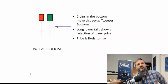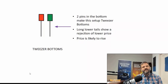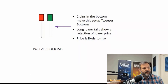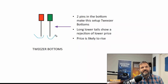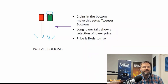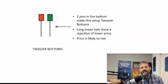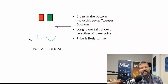The other one is a tweezer bottom, and again this is a similar concept. It didn't engulf, but it tested the level. If it had gone down a little lower and closed just a bit higher, it would have been considered an engulfing. So this is very close to an engulfing — the exact same level. You can also call this a double bottom, which is a reversal. A lot of these patterns are really the same thing.